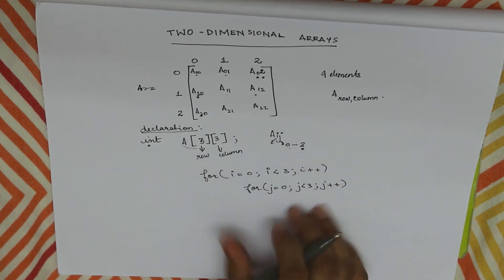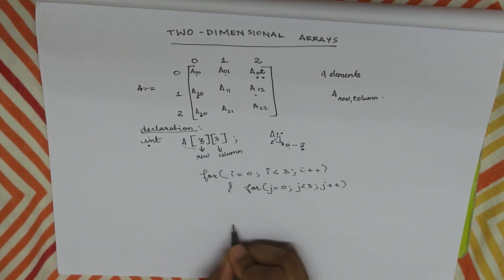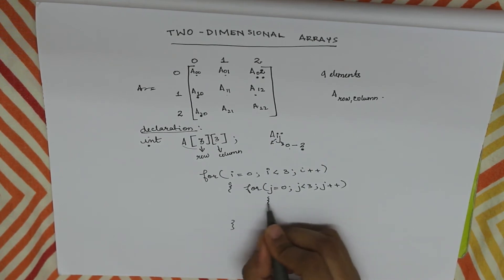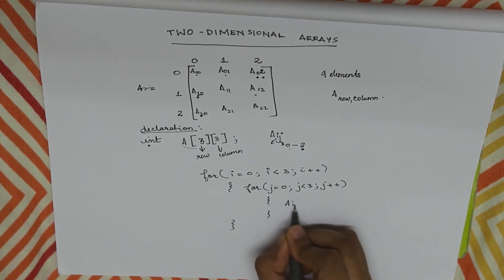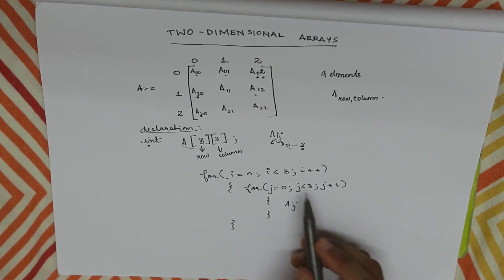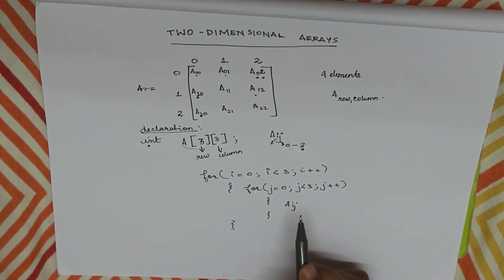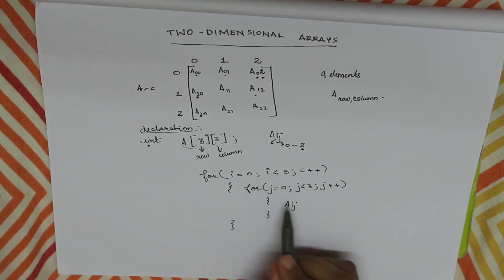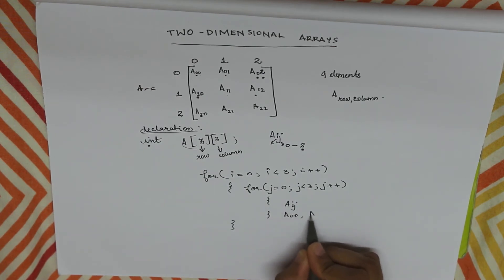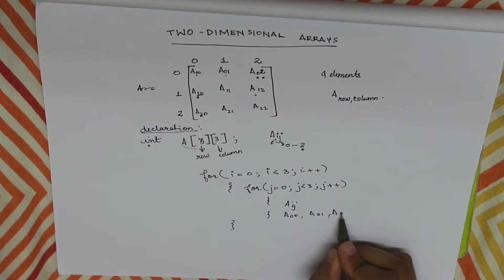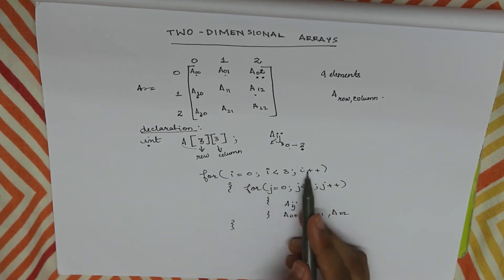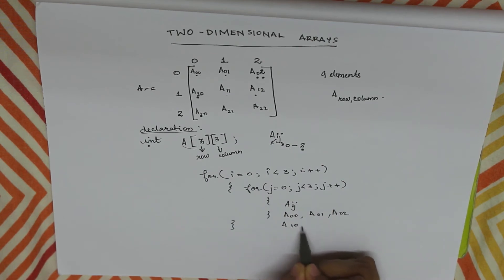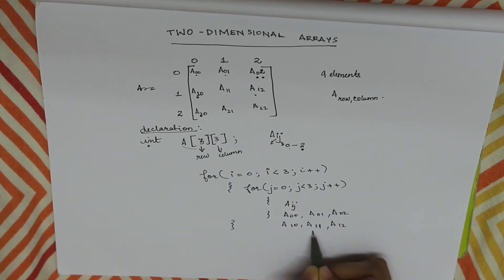So when we access A of i, j — first i is zero, then j goes zero, then j becomes one, then j becomes two. Then it stops and i is incremented. Then we access A of one zero, A of one one, A of one two. We have two nested for loops to iterate through all elements of the matrix.